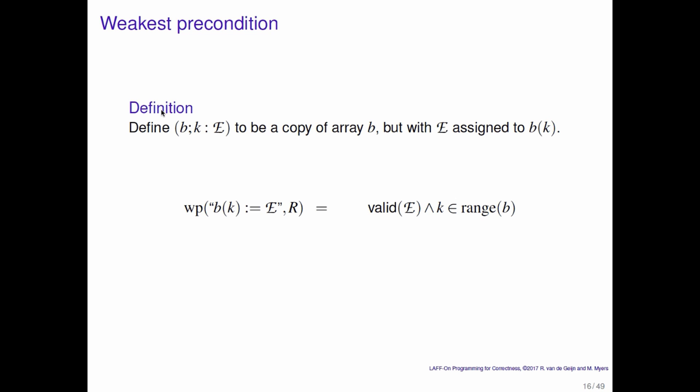The weakest precondition of assigning the result of expression e to the element of b indexed by k, leaving you in a state where r is true, is given by: first, we need to check whether the expression is a valid expression; we need to check whether k is in the range of b; and then we look at r and do a textual substitution of array b — but with the element indexed by k replaced by the result of expression e — substituted in for every free occurrence of array b. So what we're really doing is looking at the entire array b as one variable and doing an entire substitution of the new array into it.